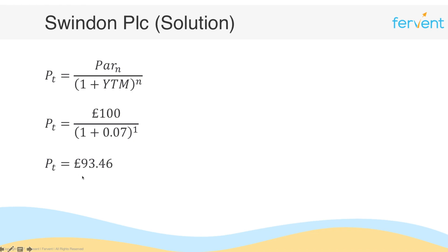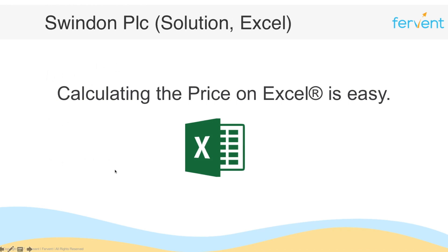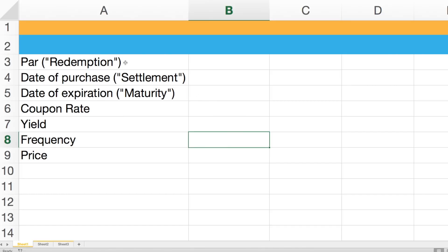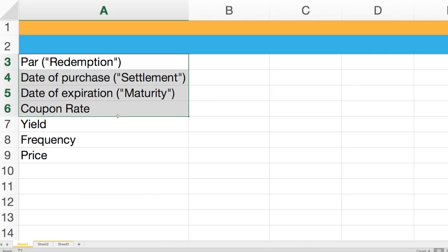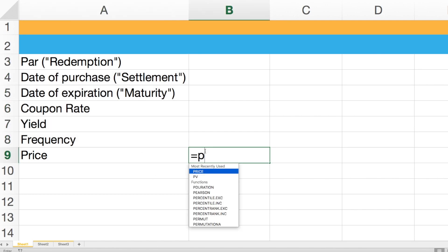Of course, this is less than the par value, which means the bond is trading at a discount, and that should come as no surprise. This is how we calculate the price of a zero coupon bond manually, but we can also calculate it in Excel. I've just set out the names of the different variables we're going to use to compute the price using Excel's PRICE function.